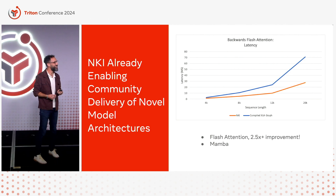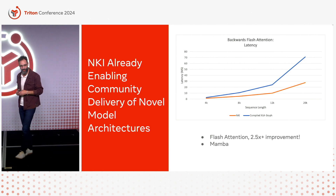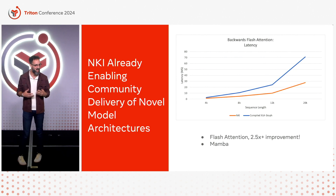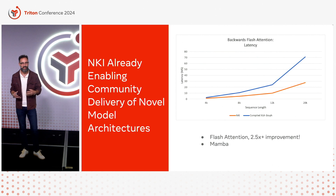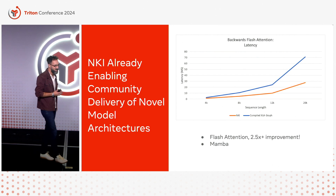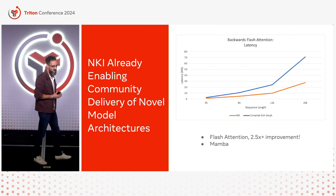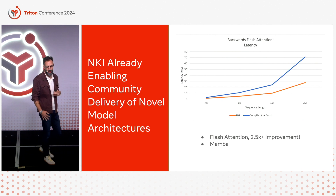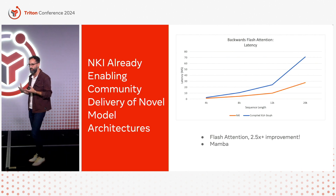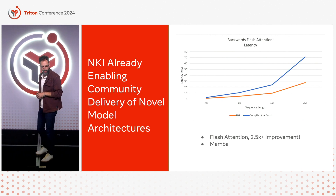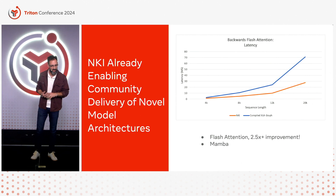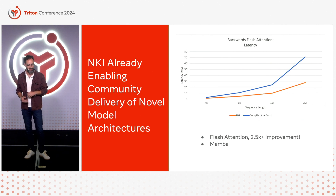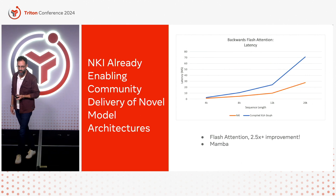We've already seen great success with this internally with our own deployments. For example, with Flash Attention — using it to load keys, queries, and values once, and then fusing the operations and writes back together — we gained over a 2.5x improvement in latency using NKI versus the compiled XLA graph generated from Torch Autograd. We've also had experience doing this with Mamba, a new state-space model architecture designed around modern accelerator capabilities, and we run this for our own production models today.